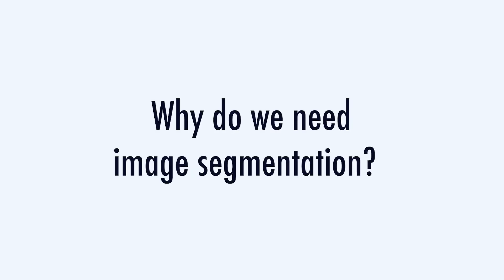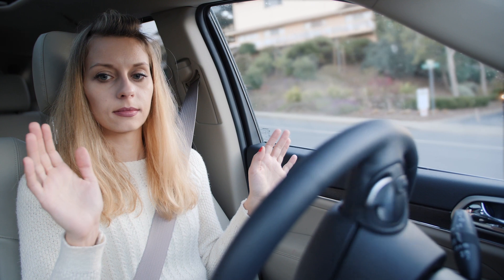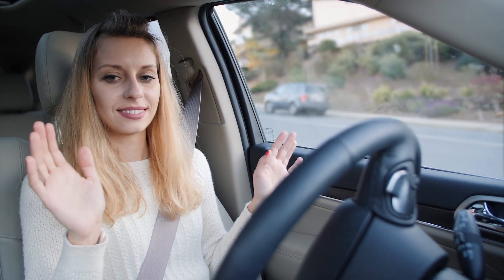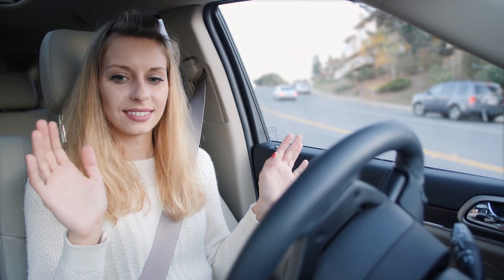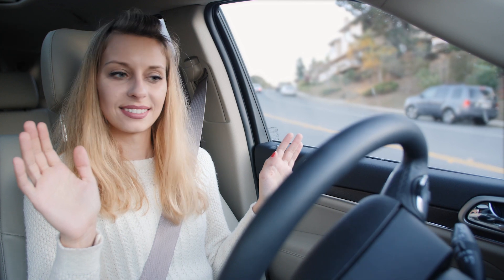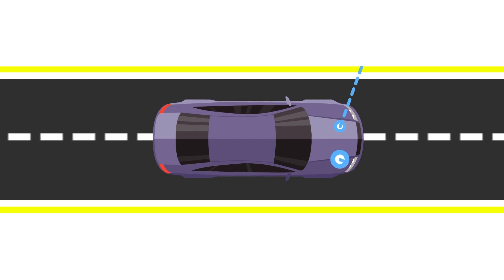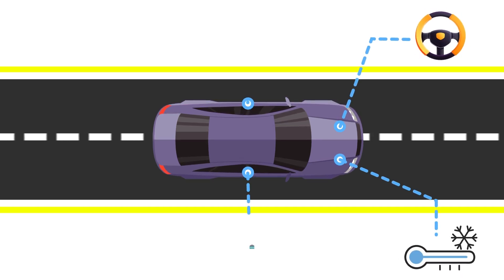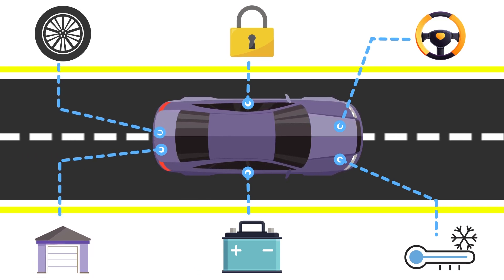Why do we need image segmentation? If I say the words 'autonomous vehicles,' it becomes clear. Autonomous vehicles need sensory devices — like cameras, radar, and lasers — to allow the car to perceive the world around it and create a digital map of its surroundings. Autonomous driving is not even possible without object detection, which itself involves image classification and segmentation.